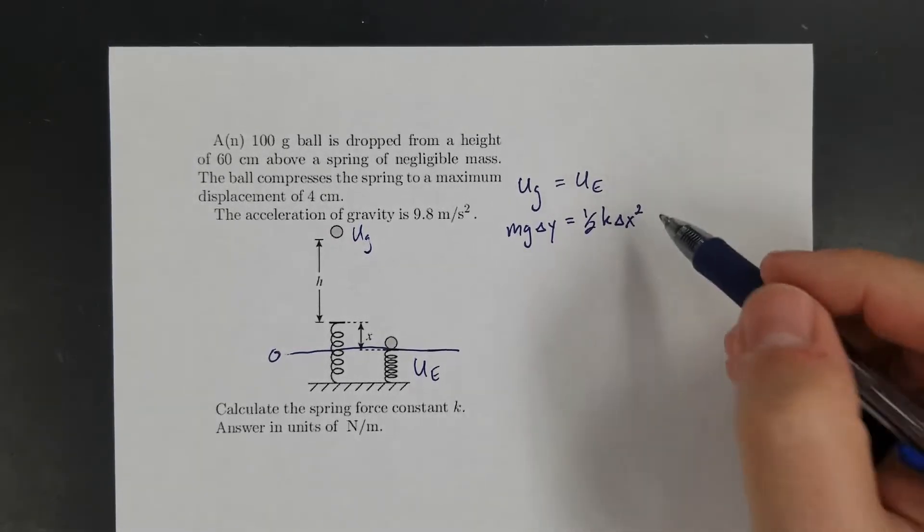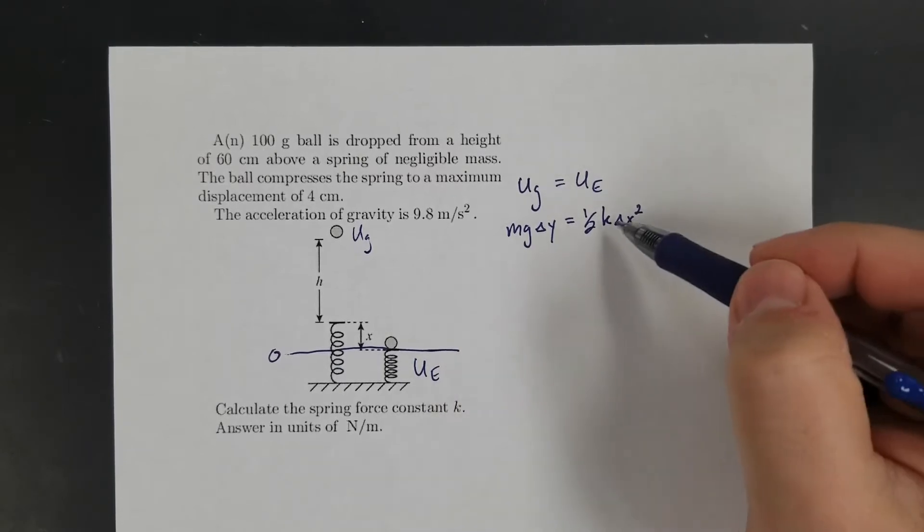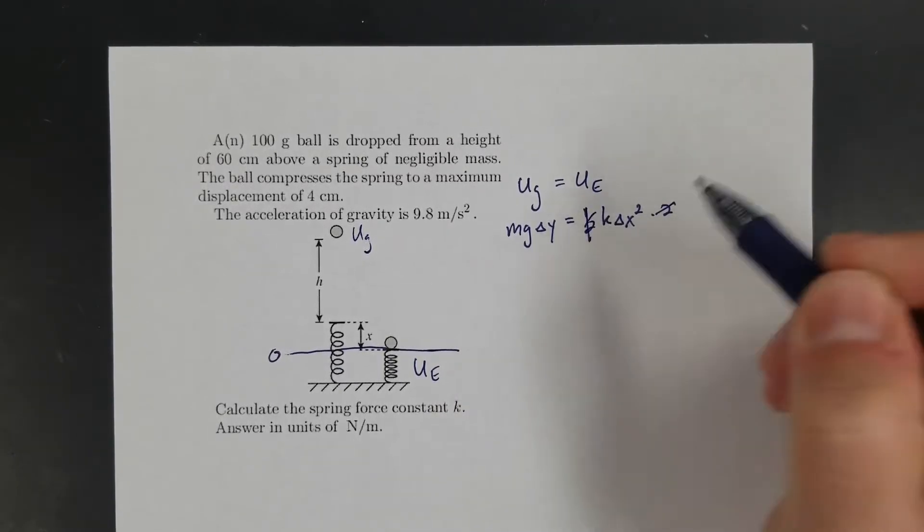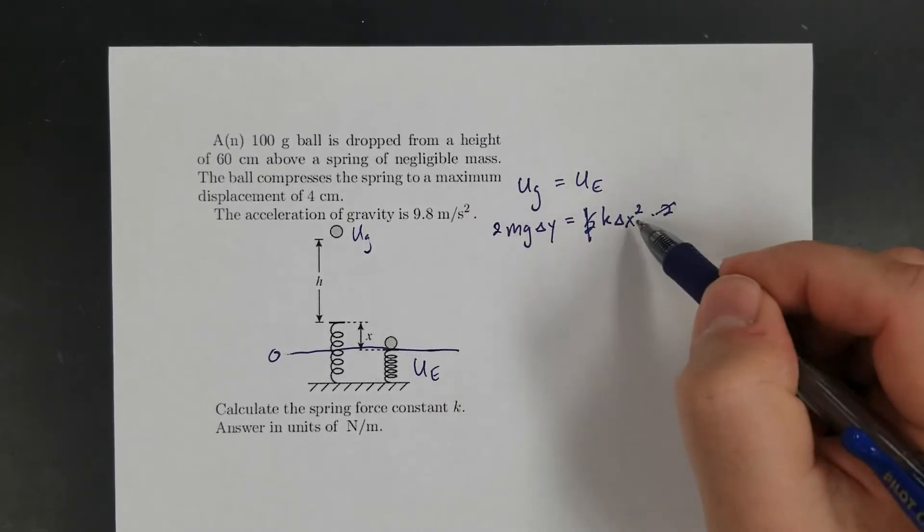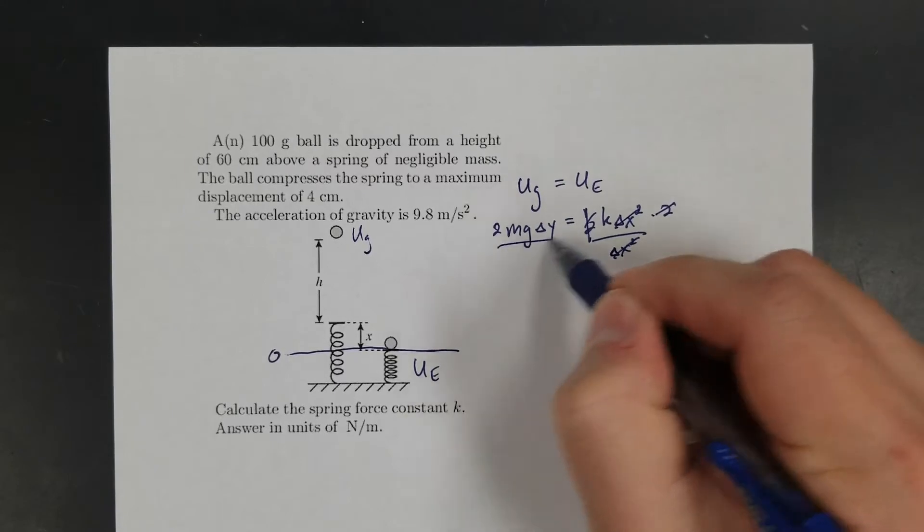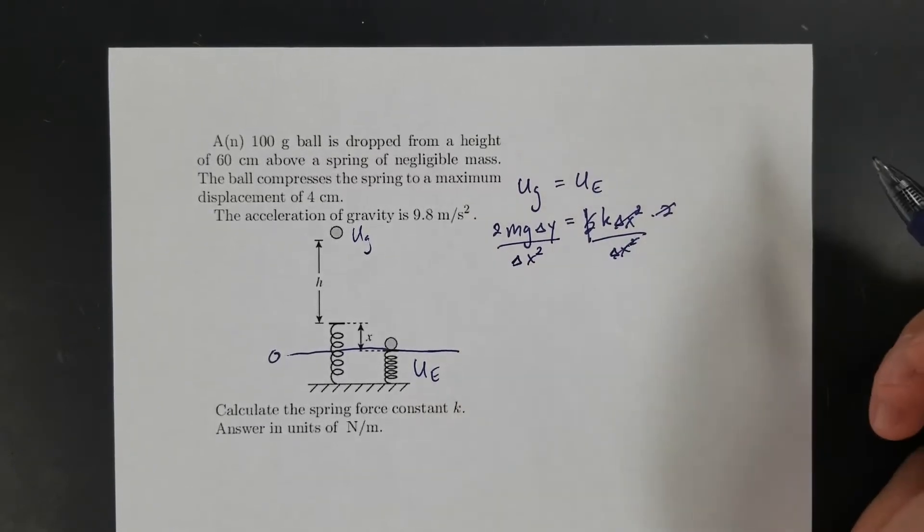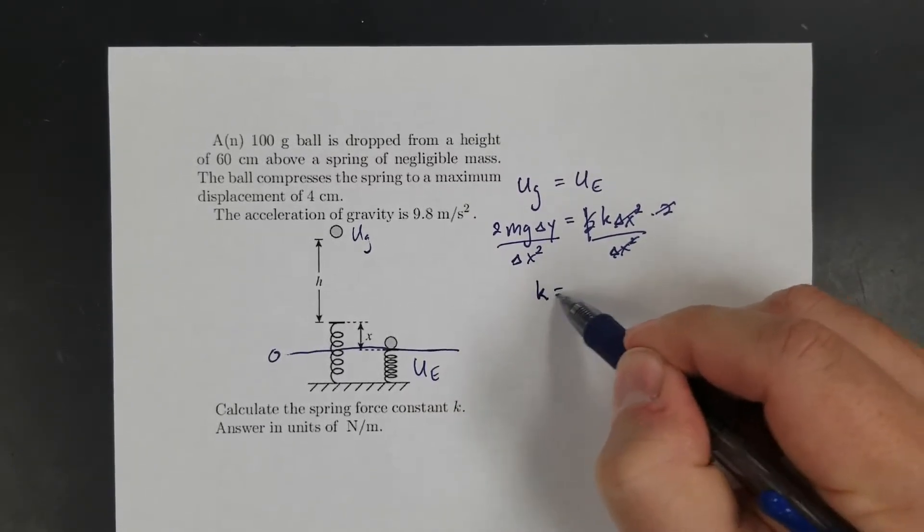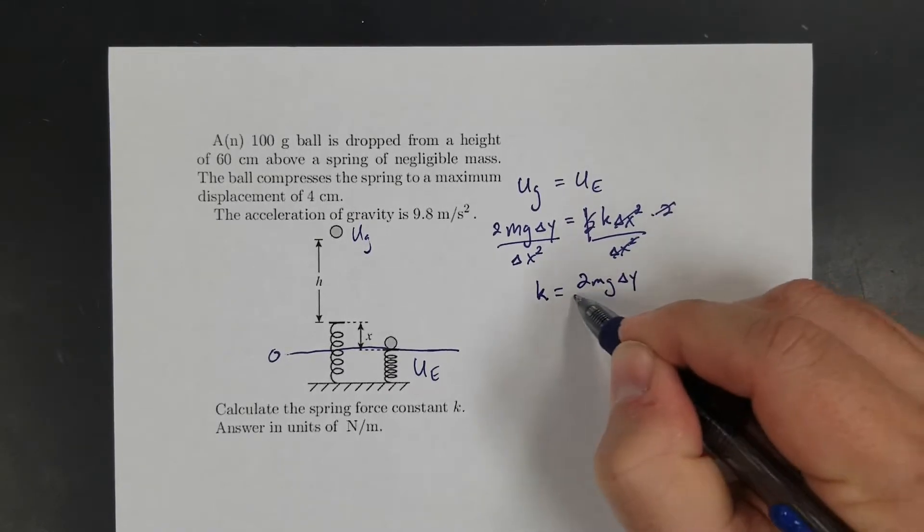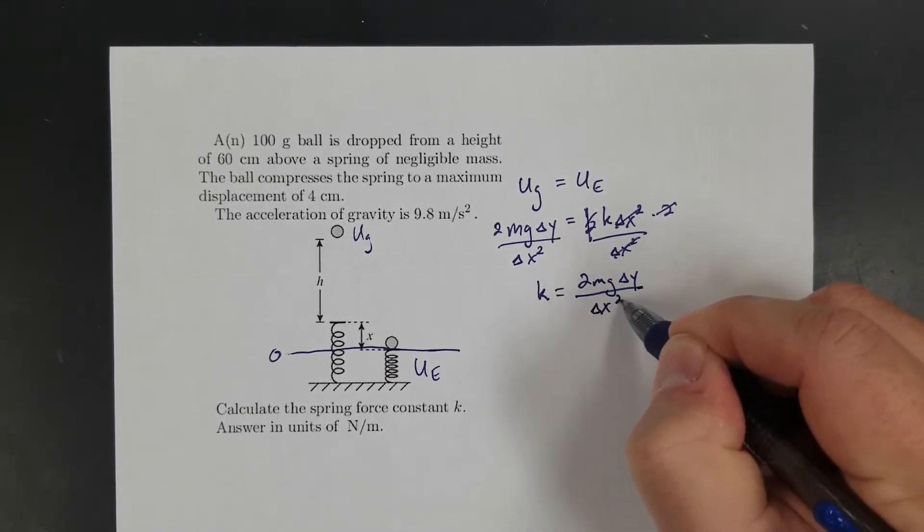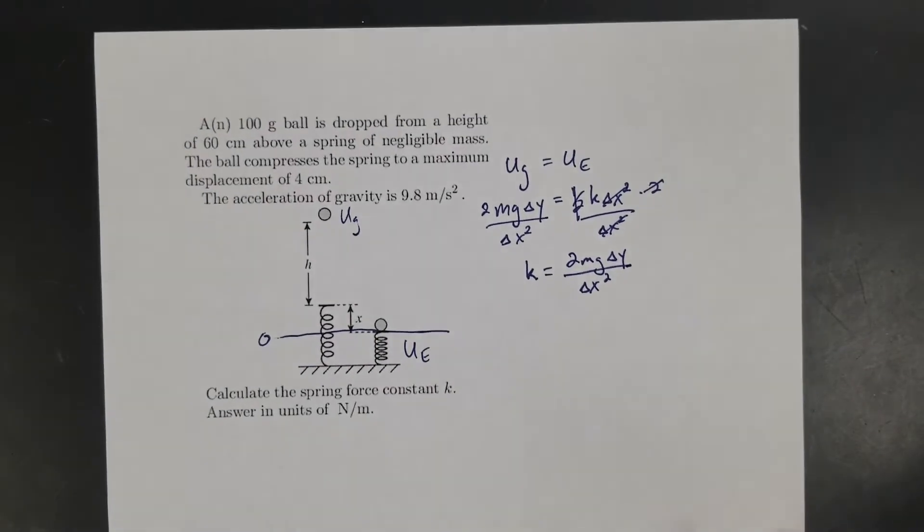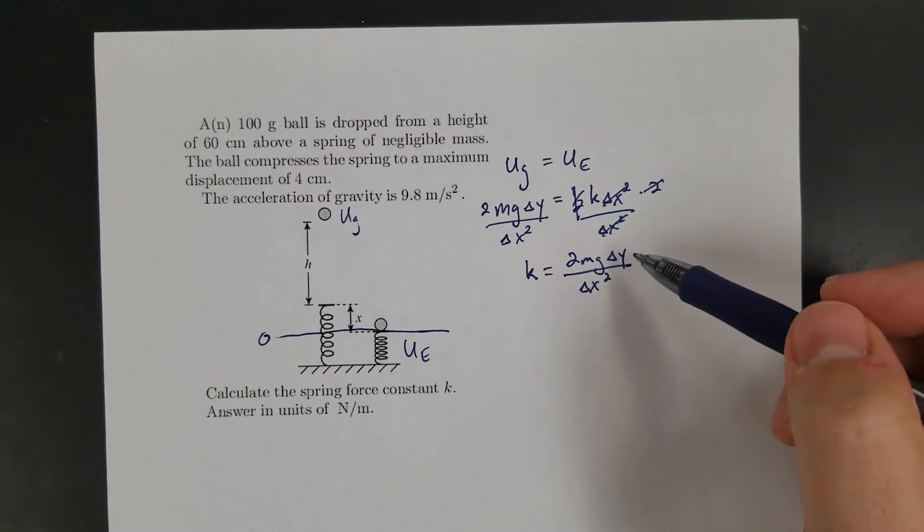I want to solve for the spring constant, so I can multiply by 2 to get rid of this, and then divide by ∆x². I'm left with k = 2mg∆y/∆x². It always helps to do the algebra first - don't try to just plug in and solve.